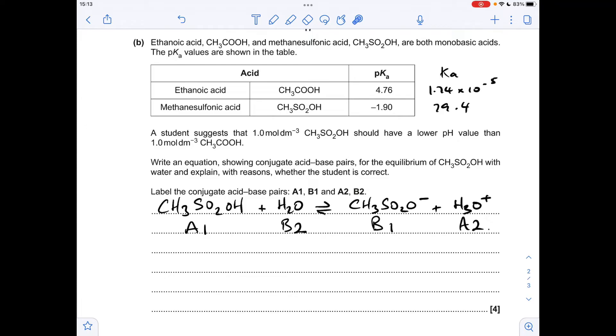And for the other part of the question, whether the student's correct about the pH of the methane sulfonic acid being lower than the ethanoic acid, you'll notice I've worked out the Ka value, so I've just done 10 to the minus pKa. And what this is telling us is that the methane sulfonic acid is much more dissociated than the ethanoic acid. So if it's more dissociated, it's going to have a higher H+ concentration, and if it's got a higher H+ concentration, it's going to have a lower pH.